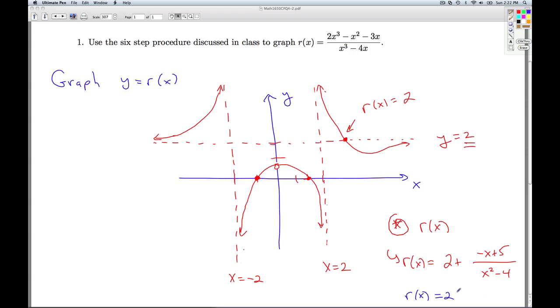Well, if r of x actually equals 2, then what has to be true about the piece left over? The piece left over has to be 0. So can you tell me where this piece is equal to 0? What value of x is going to make this 0? Well, I think by inspection, in other words by looking at it, you can see that when x equals 5, I get a 0 in the numerator and a 21 in the denominator. So this actually happens down here at x equals 5. It crosses the horizontal asymptote.